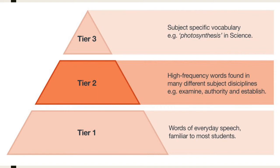Tier three words are specific to a certain subject or topic. For example, a tier three word would be 'photosynthesis' — you would usually only use that word if you were talking about the process of photosynthesis in science. There are other words you'd only use in certain subjects; if you used them elsewhere, they wouldn't make sense. The words we're going to look at now are tier one and tier two words.